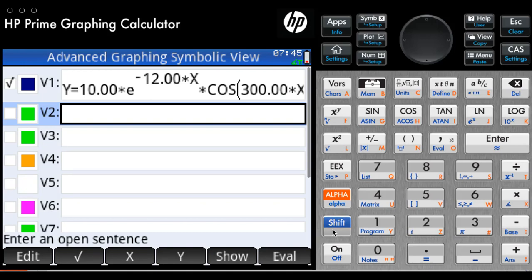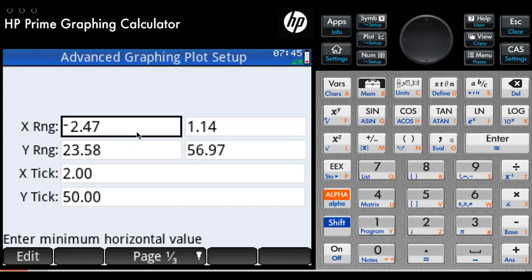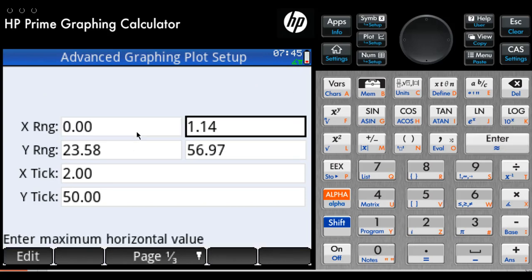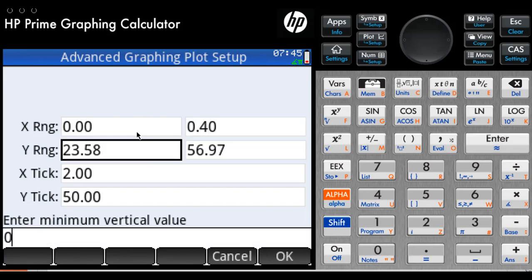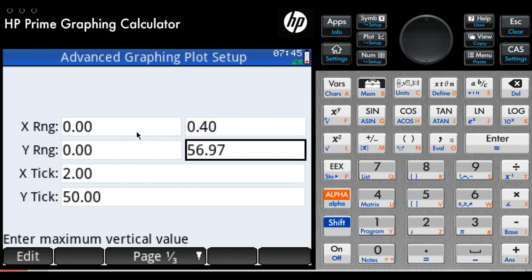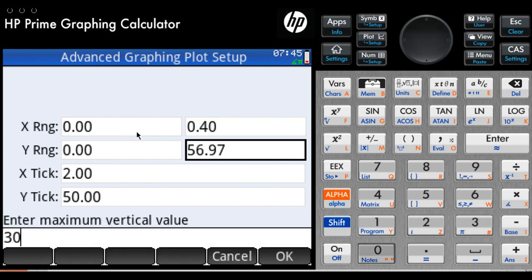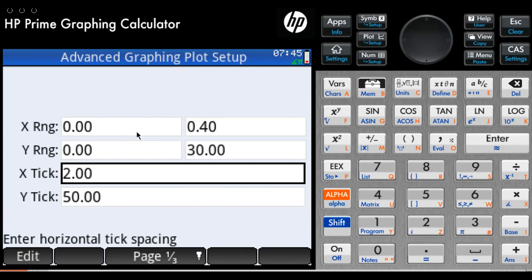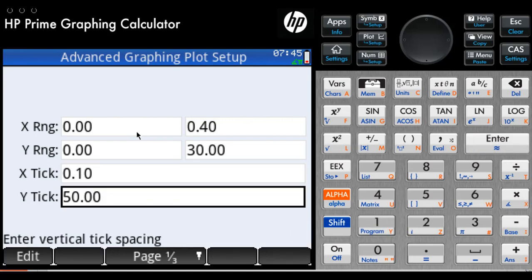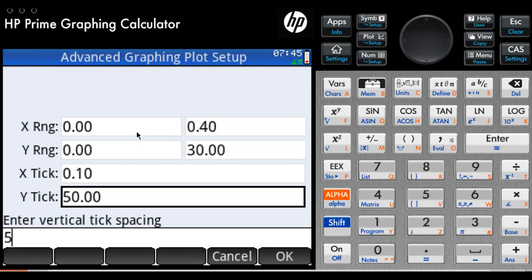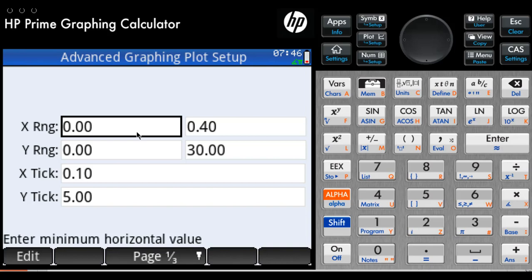And we are ready to set the range. Shift plot. And the range we set was going to be between 0 and 0.4, and between 0 and 30 on the vertical axis. And the ticks will be every 0.1 we have a tick, and on the vertical axis every 5. And then we go and plot.